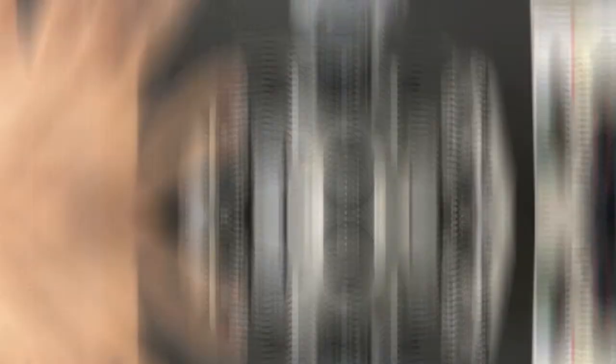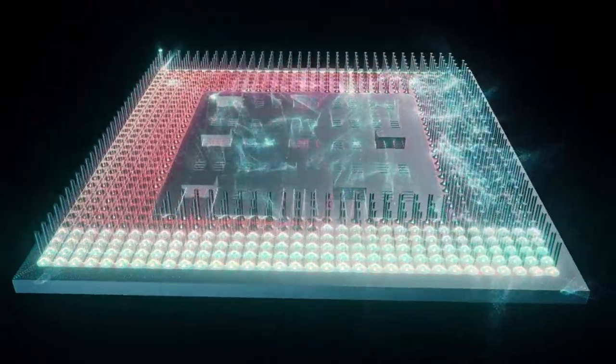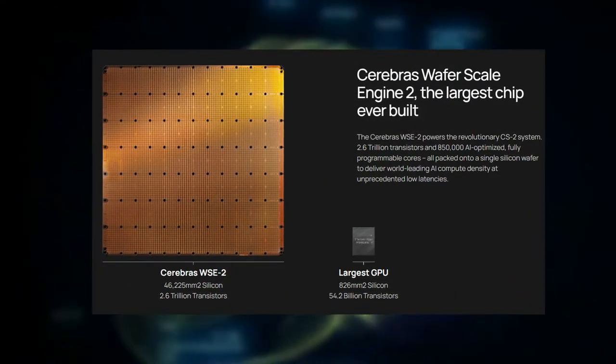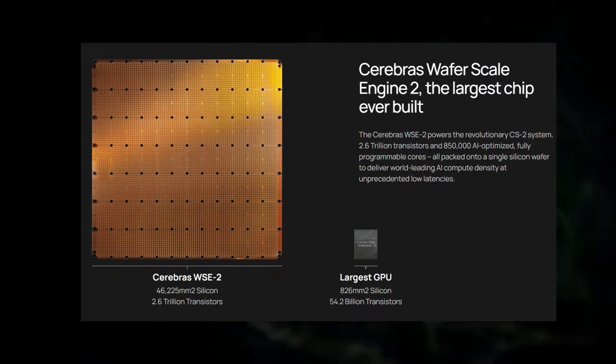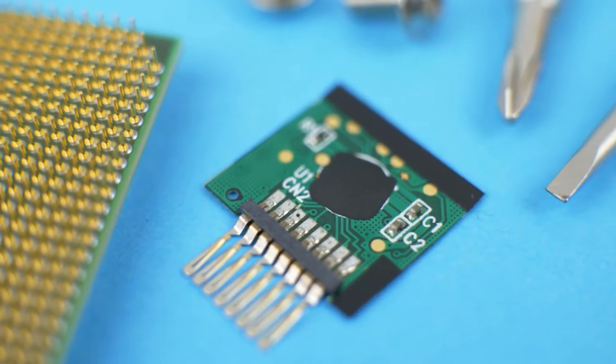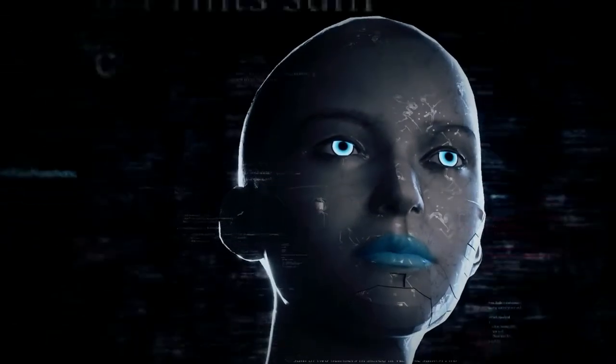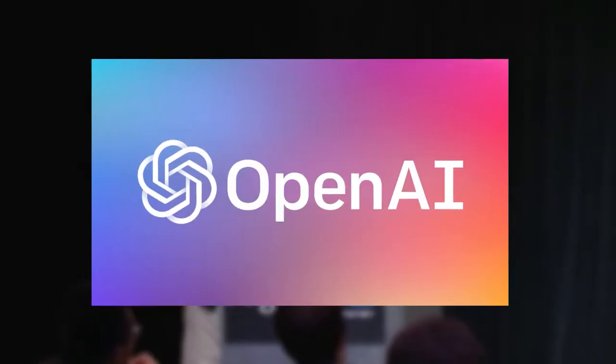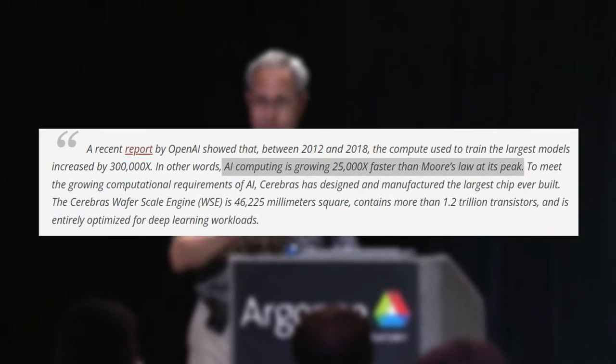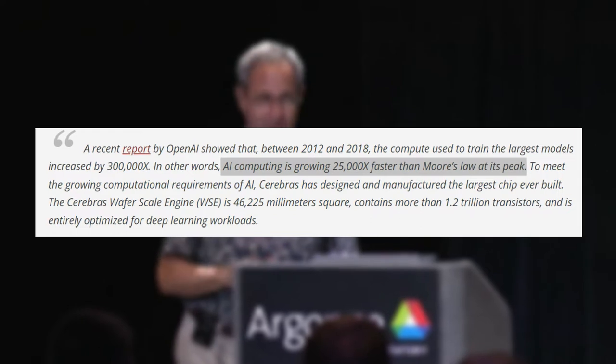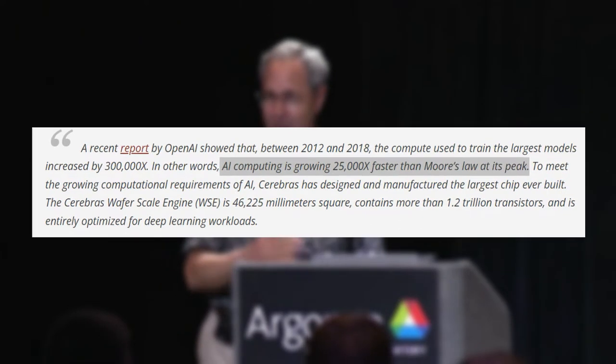The rise of AI and shortage of processing power led to the birth of a monstrous CPU with 850,000 cores and 40 gigabytes on-chip memory. It is not clear whether Moore's law will hold up, but it is obvious that AI is growing much faster. A recent OpenAI report showed that between 2012 and 2018, AI computing is growing 25,000 times faster than Moore's law at its peak.